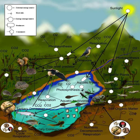A food web is a natural interconnection of food chains and a graphical representation of what eats what in an ecological community. Another name for food web is consumer resource system.